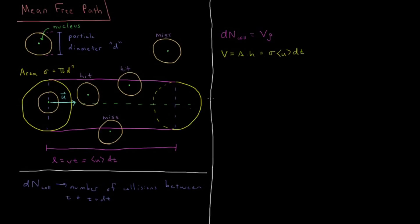Taking that value for volume, we can substitute in for our number of collisions. We expect dN_coll to be equal to the cross-sectional area sigma times the density of the gas times the average velocity of the particles times the change in time dt.